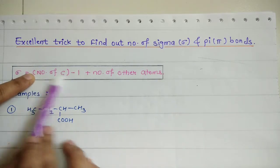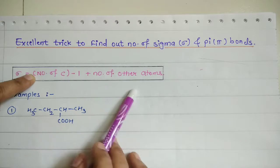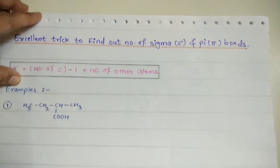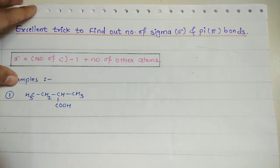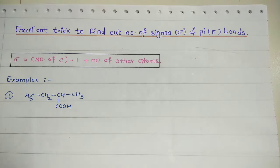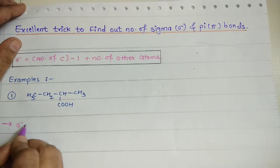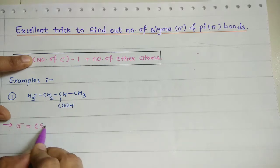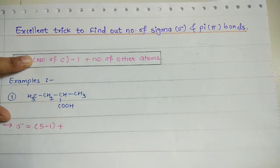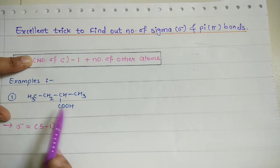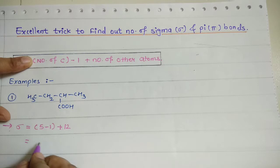For sigma bonds, students, you have to take: first, the number of carbons minus 1, plus the number of other atoms. That is the formula. For example, in this organic structure, total carbons are 1, 2, 3, 4, and 5 — so write down 5 minus 1 according to the formula, plus the number of other atoms, which is 12. Solving this gives you 16 total sigma bonds in the structure.